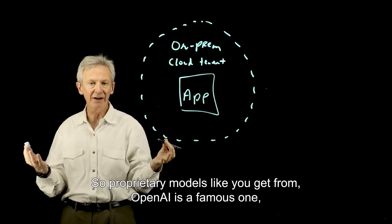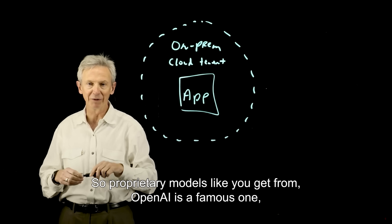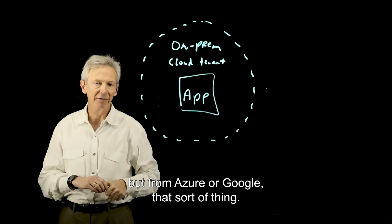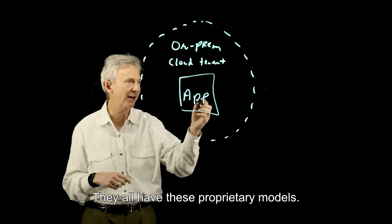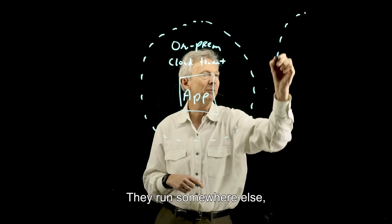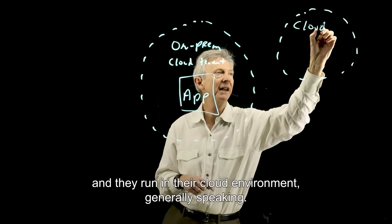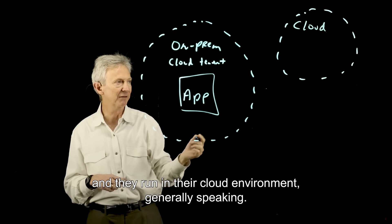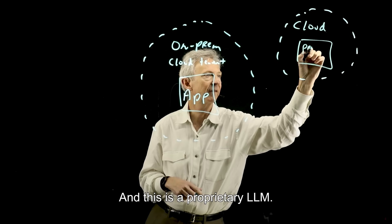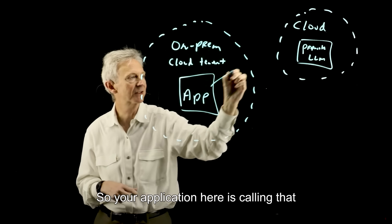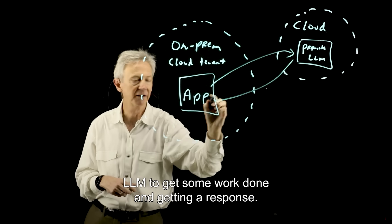So proprietary models like you get from OpenAI, a famous one, but from Azure, Google, that sort of thing, they all have these proprietary models. They run somewhere else and they run in their cloud environment, generally speaking, and this is a proprietary LLM. So your application here is calling that LLM to get some work done and getting a response.